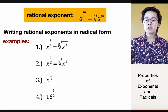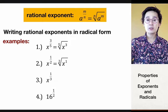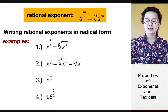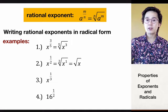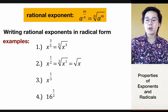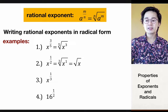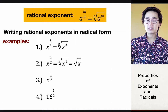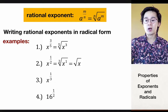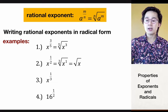Most of us are not used to seeing 'second root of x to the first power,' so in algebra we simplify this to the square root of x. So every time you see a rational exponent of 1 half, you can automatically change it to the square root of that number. x raised to 1 half is the square root of x — and when you see 81 raised to 1 half, it's simply the square root of 81.